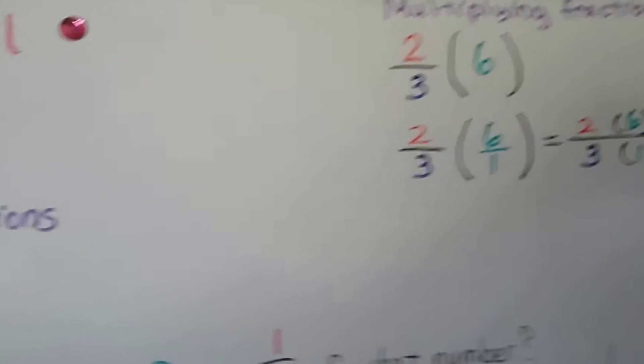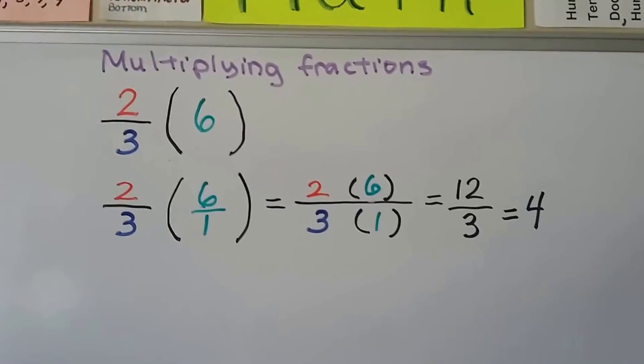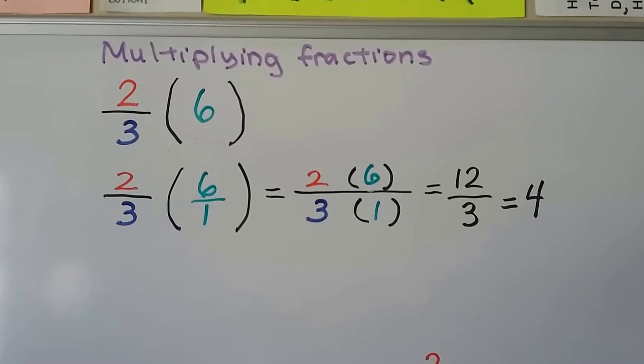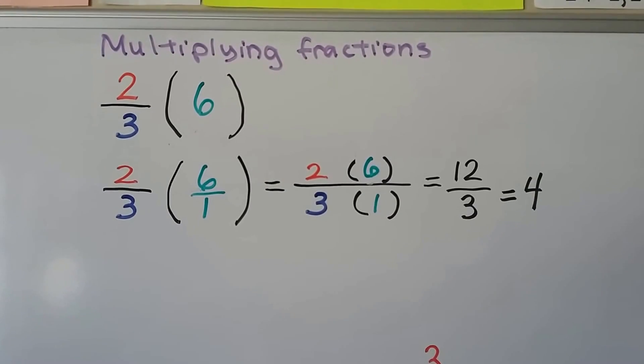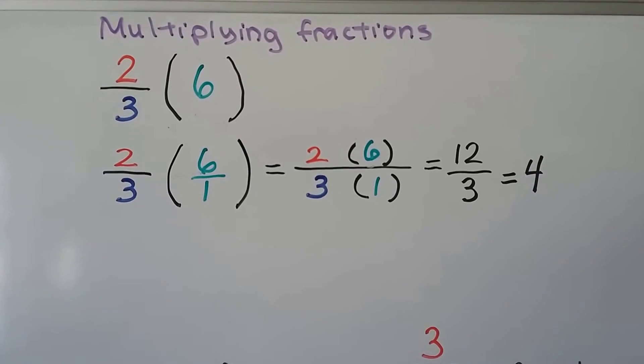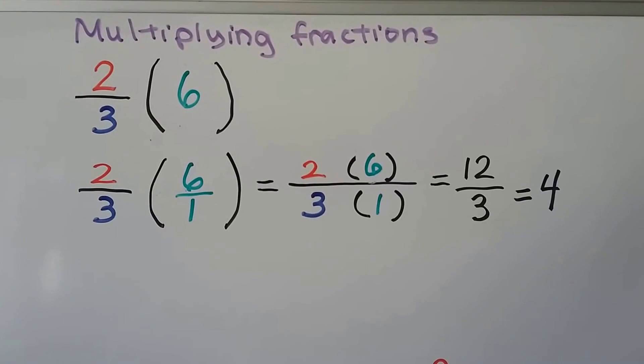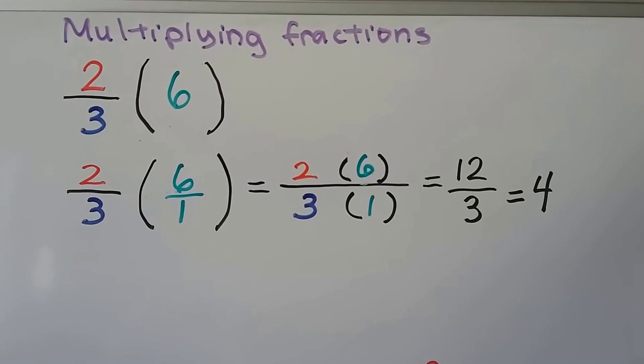As a real quick review, multiplying fractions, we can write a 6 as 6 over 1. Then we just multiply straight across. The numerator to the numerator, denominator to the denominator. 2 times 6 is 12, 3 times 1 is 3. We end up with twelve-thirds, and when we simplify it, we get 4.